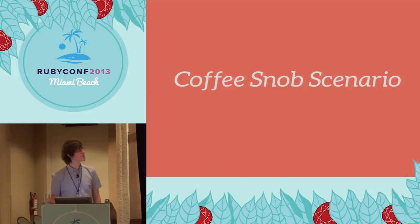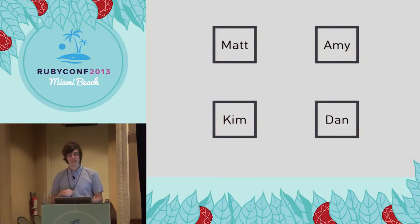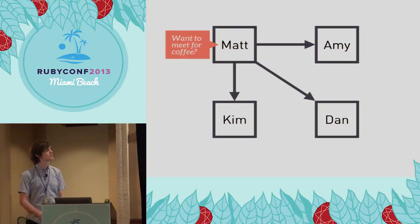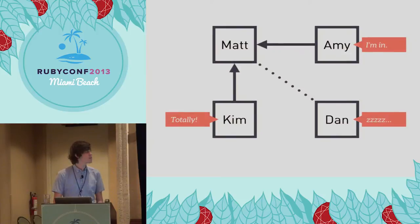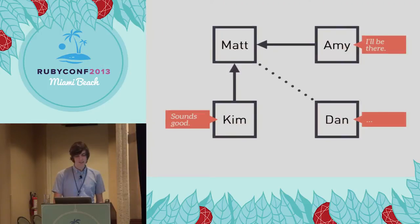We actually did this this morning over Twitter, trying to find coffee. So there's four friends — Matt, Amy, Kim, and Dan. They all live in Atlanta. And every Friday morning, they text message each other to try to find out where they're going to go for coffee. Matt wakes up first Friday morning and asks everyone else where they want to go for coffee, if they're awake. Amy and Kim want to go, but Dan is still asleep and hasn't responded yet. Matt suggests Octane, which is one of my favorite coffee shops in Atlanta. Dan still doesn't get the message. Amy and Kim are like, yeah, we'll meet you there.